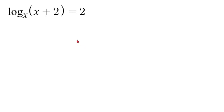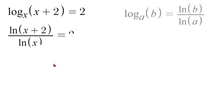First thing we are going to do is apply logarithm principles to this. If we had log a to b we can rewrite that as natural log of b over natural log of a. In this case our b value is x plus 2 and our a value is x. So we have natural log of x plus 2 over natural log of x is still equal to 2.